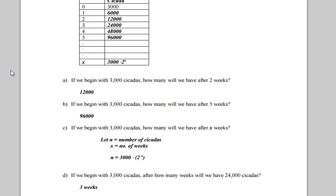Now it looked like everybody got D. 3 weeks for 24,000 cicadas. That comes straight off your table.